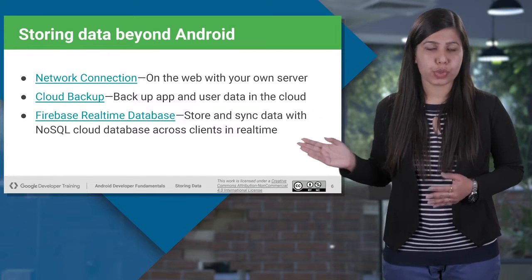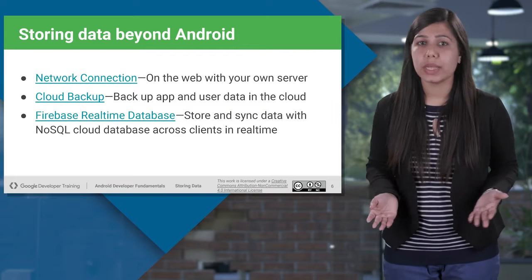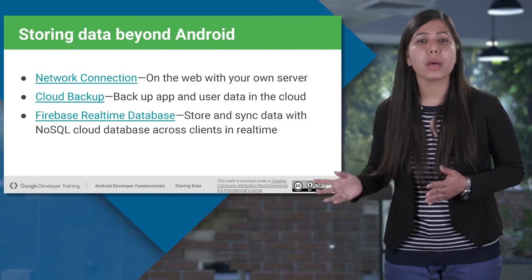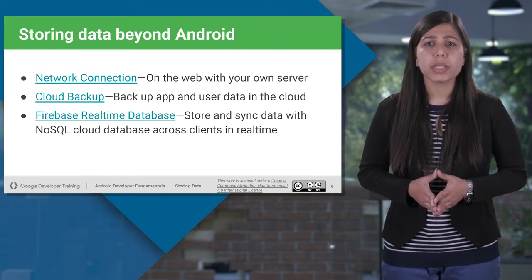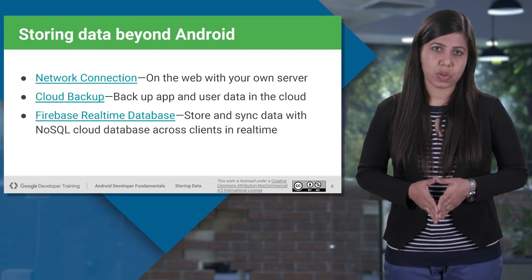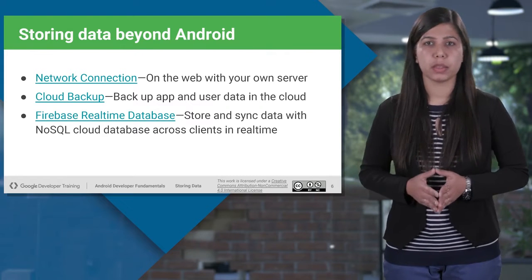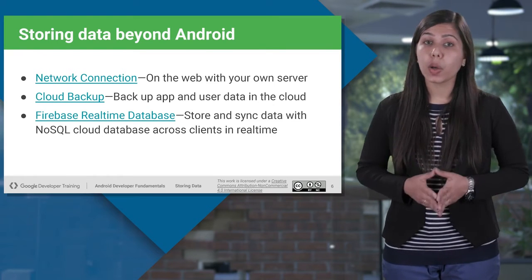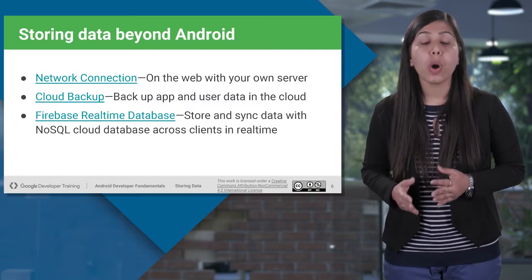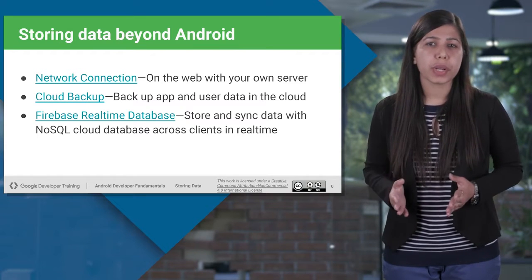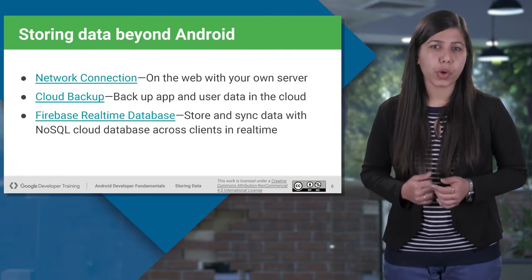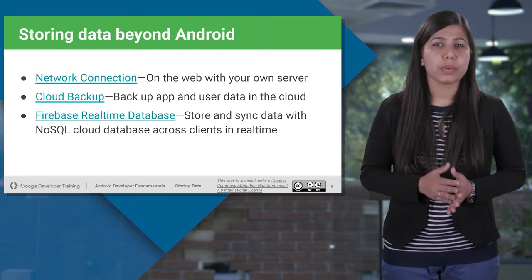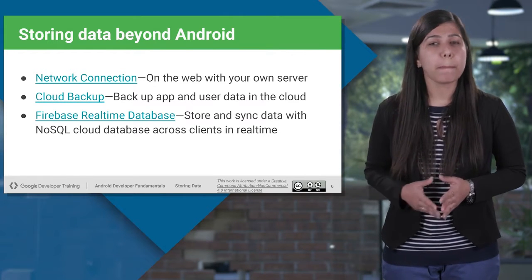A few options include network connection. Android works well with networks and makes it easy to connect to various services including storage. You can store data from the server over network connections. We also have cloud backup — you can back up your app's data or user information in the cloud, such as Google Cloud. Information stored in the cloud means you won't need to rely on wires to get it back; simply connect to the internet and retrieve the data onto your phone.